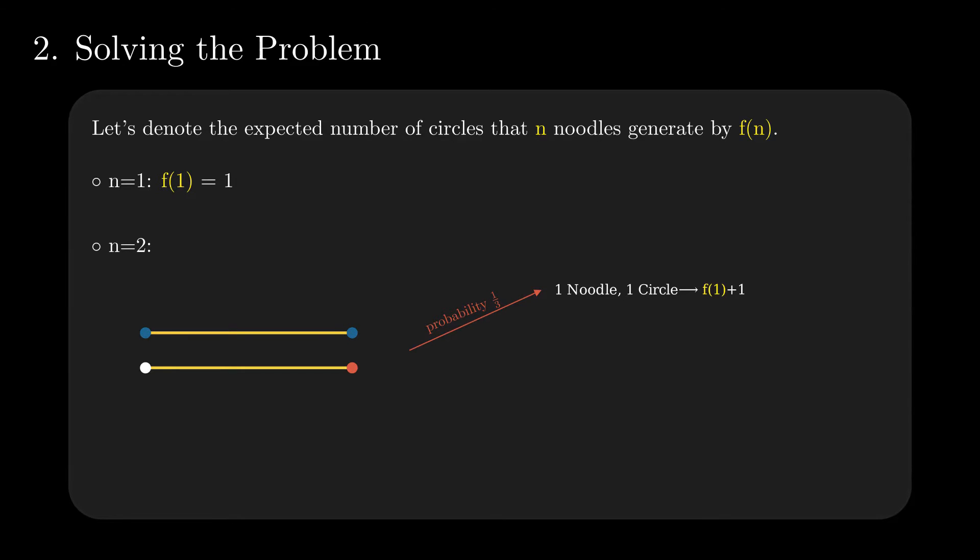The remaining available choices are edges from other noodles. They add up to 2 in 3 chances, resulting in 1 long noodle alongside 0 loops. The expectation is, as such, f(1). Utilize the linearity of the expectation, and we arrive at the equality f(2) equals a third plus f(1).